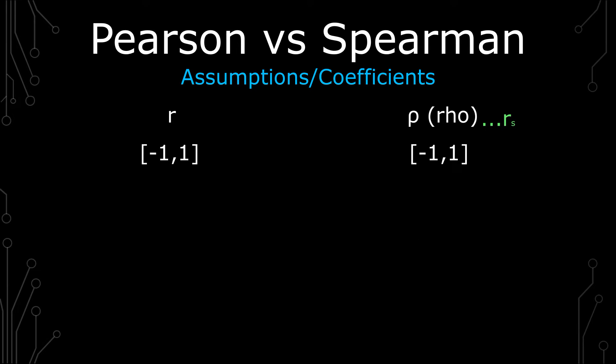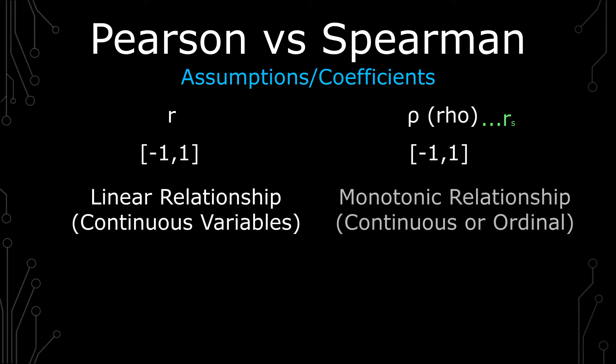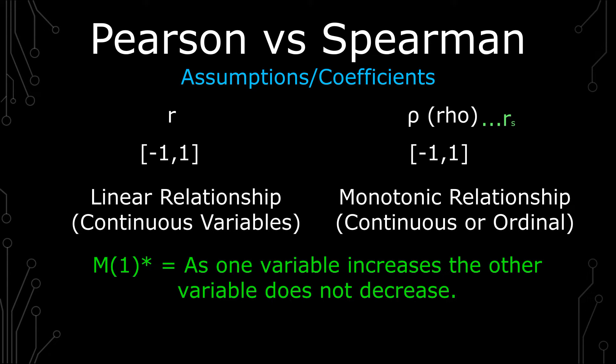For Pearson, you're only looking at continuous variables that have a linear relationship. In Spearman, you're looking at what's called monotonic variables, that is, continuous or ordinal. A definition to clarify the relationship of monotonic variables is, as one increases, the other doesn't decrease.